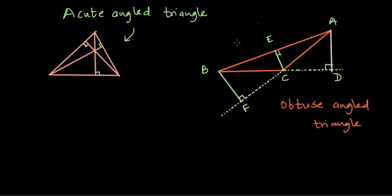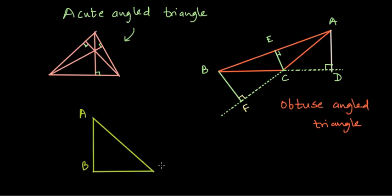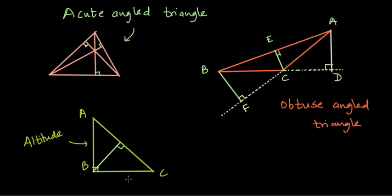Another kind of triangle is a right angle triangle, where one of the altitudes is itself a side. Here AB is perpendicular to BC, so BC is also an altitude of the triangle. You can draw the altitude from B to AC, and CB is also an altitude to AB — we can name that foot point M. For every triangle, remember that you have to drop a perpendicular from a given vertex to the opposite side in order to get the altitude of the triangle.